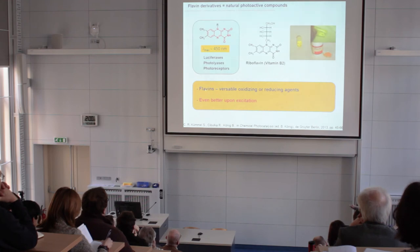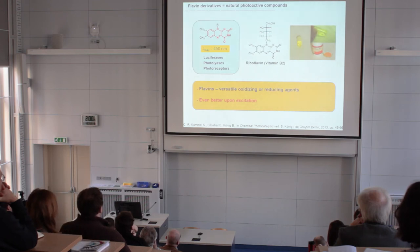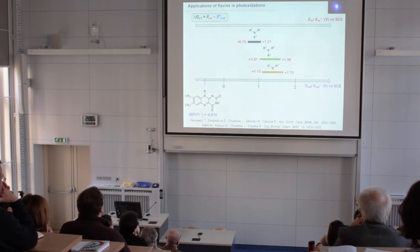And what is important, flavins are very strong oxidizing or reducing agents and even better upon excitation so we use the flavins in redox chemistry. And this is one example, this is flavin in ground state. And you can see here on this redox potential, this is a reduction potential, that this flavin is not so strong oxidizing agent to be able to oxidize these particles because the reaction is very, very endergonic.